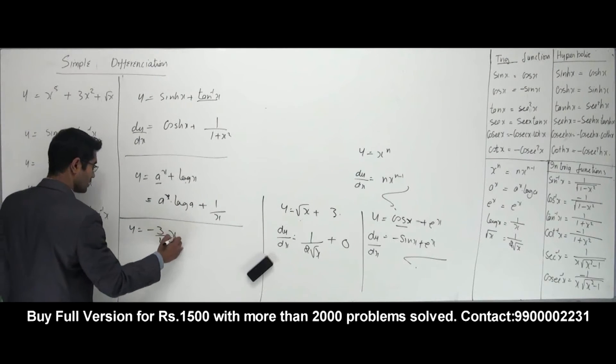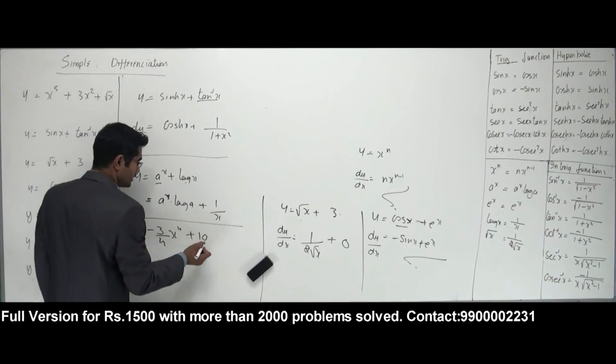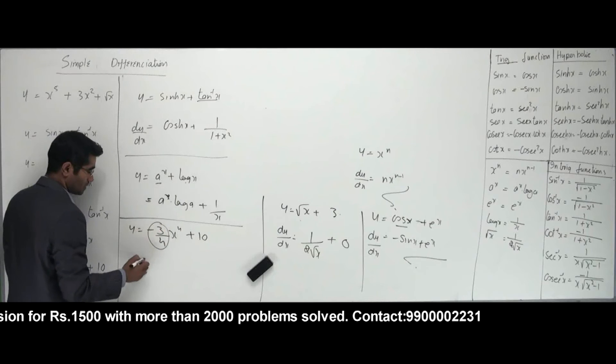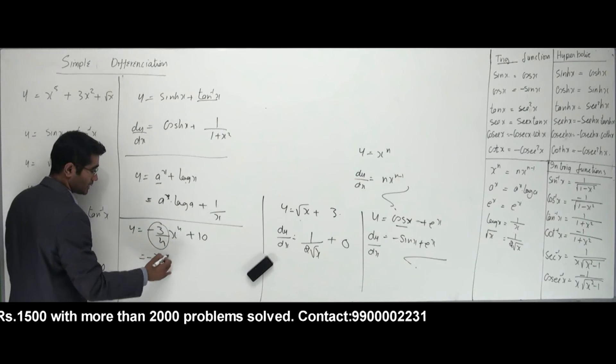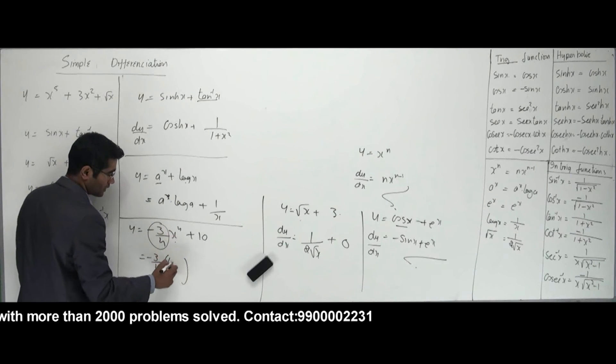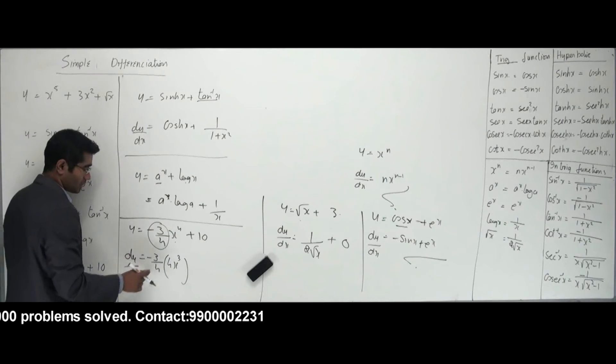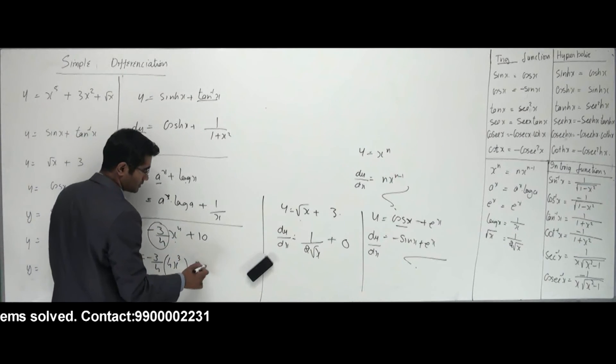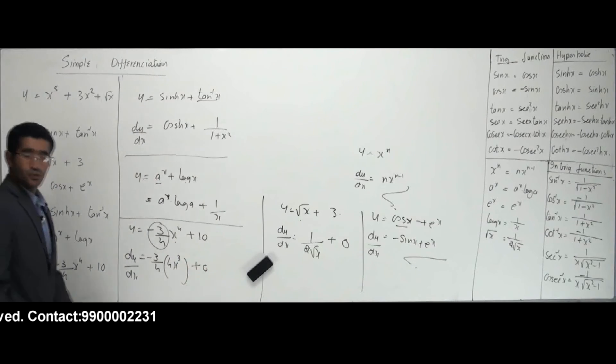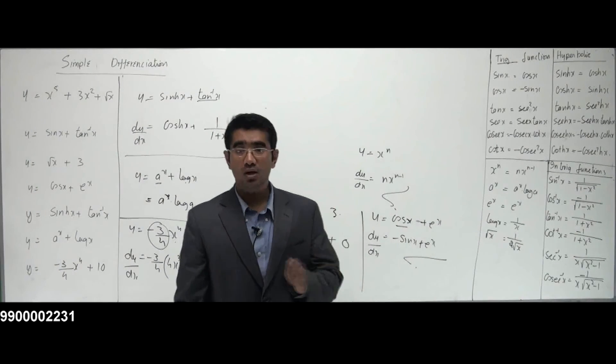The next one: y equals minus 3/4 x to the power 4 plus 10. This guy is a number, so keep it outside: minus 3/4 is out. Differentiate x to the power 4: that is 4x cubed. That is my dy/dx. This guy is a 0.